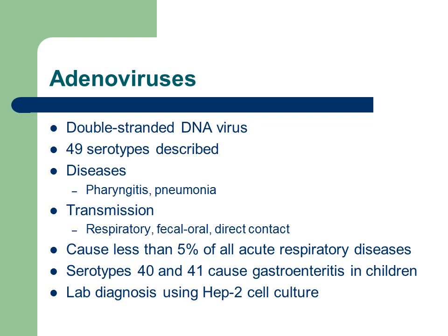Adenoviruses actually cause less than 5% of all acute respiratory diseases. Serotypes 40 and 41 cause gastroenteritis in children, so they can cause intestinal symptoms. In the laboratory, if you were to grow up an adenovirus for diagnosis, you would use the HEP2 cell lines.